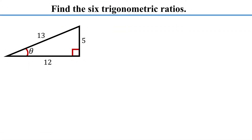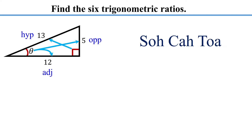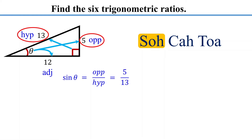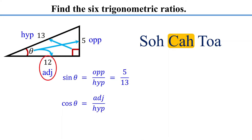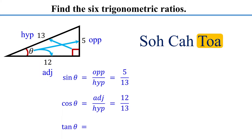Find the values of the six trigonometric ratios of angle theta. The first step is to label the sides with respect to theta. Opposite the right angle is the hypotenuse; opposite theta is the opposite side; the remaining side is the adjacent side. Using SOHCAHTOA: sine is opposite over hypotenuse — the opposite side is 5 and the hypotenuse is 13, so sine of theta is 5/13. Cosine is adjacent over hypotenuse — the adjacent side is 12 and the hypotenuse is 13, so cosine of theta is 12/13. Tangent is opposite over adjacent — so tangent of theta is 5/12.